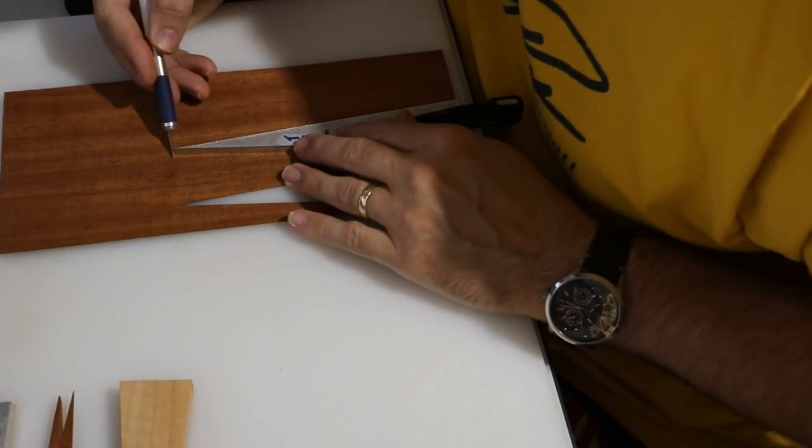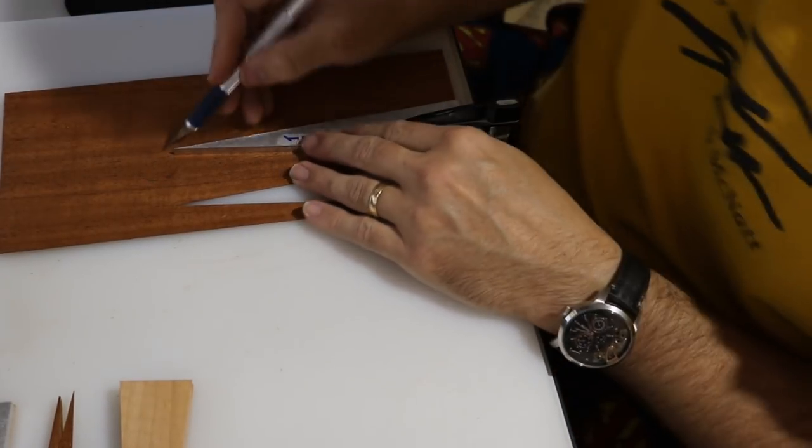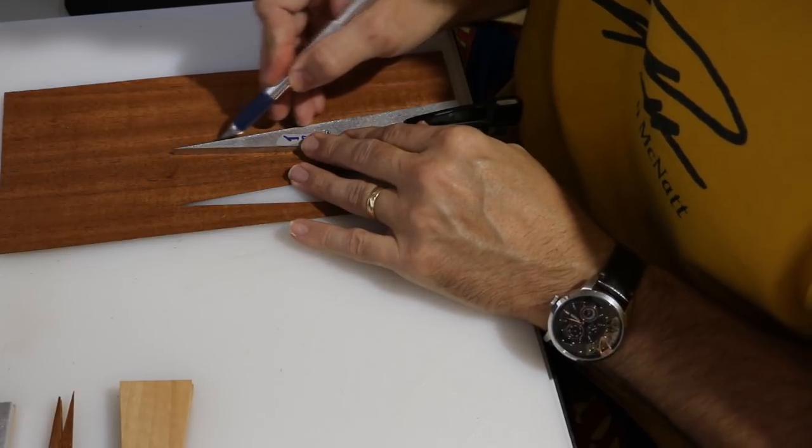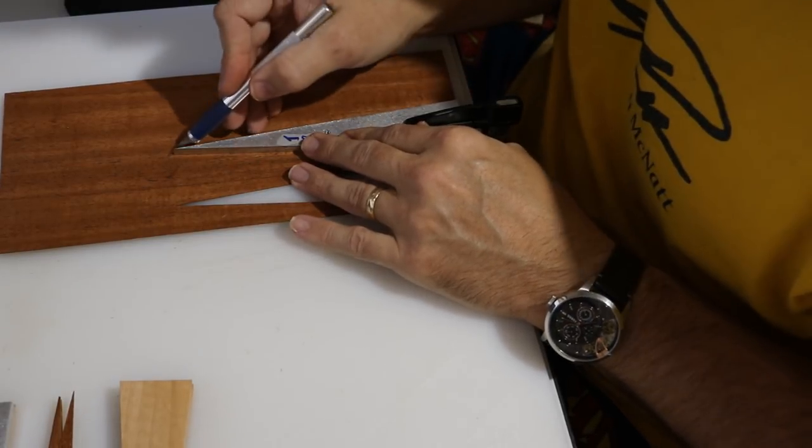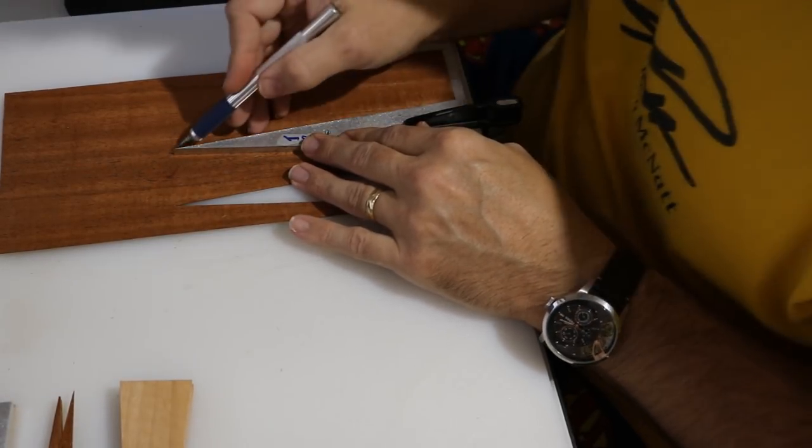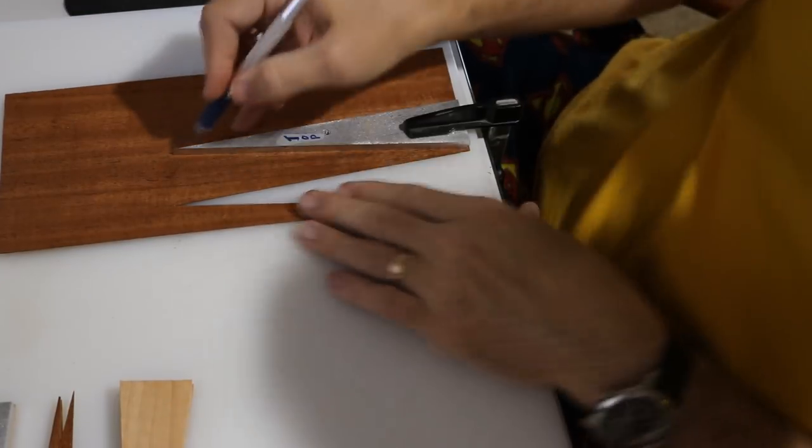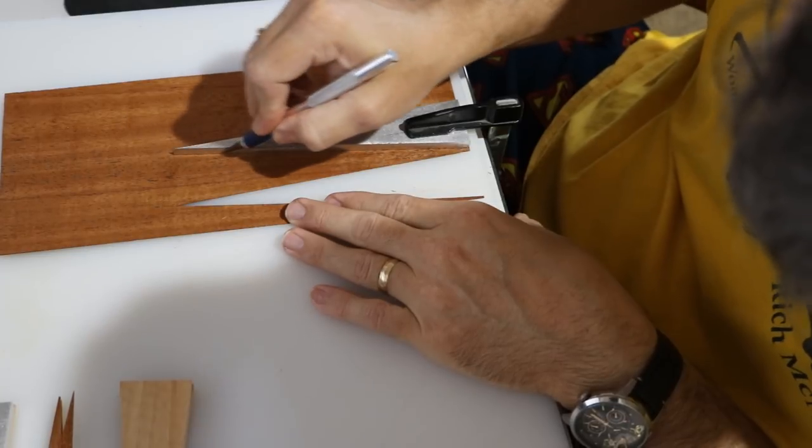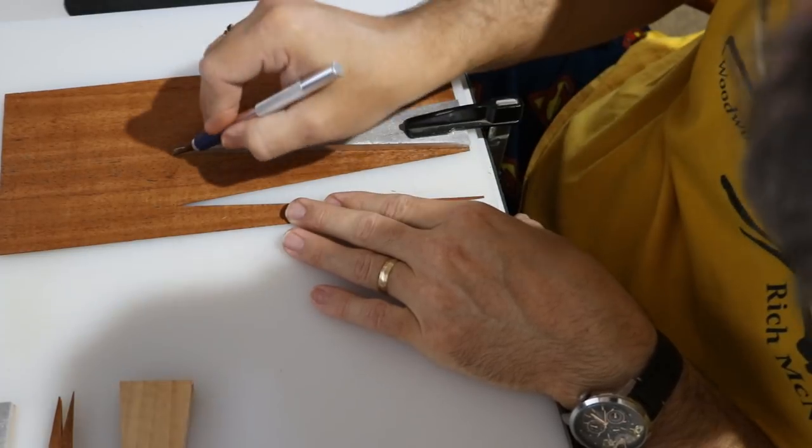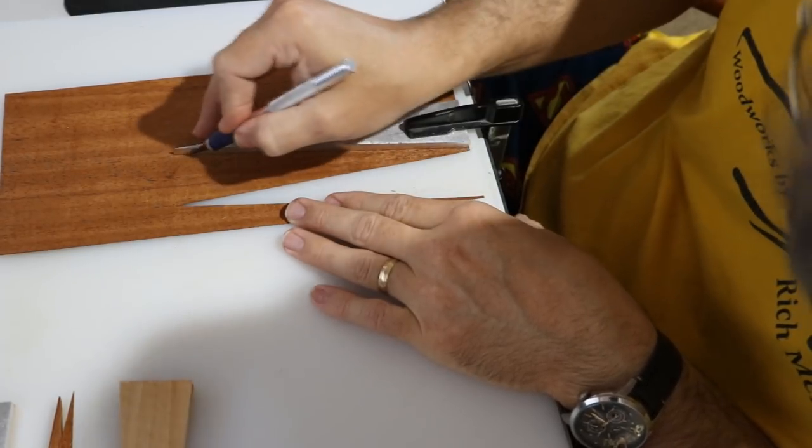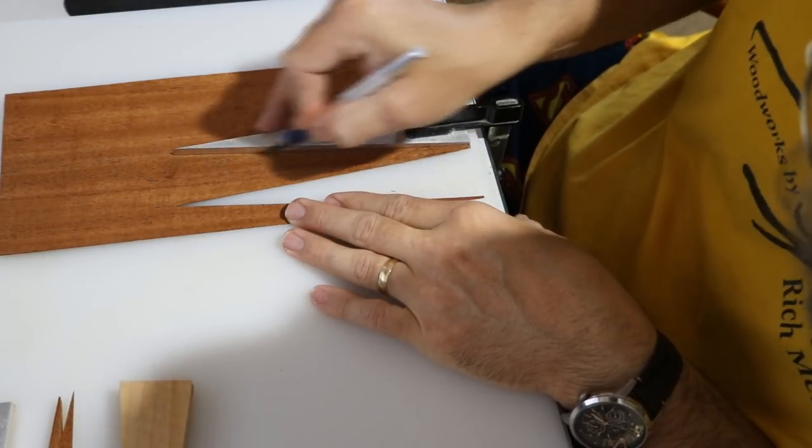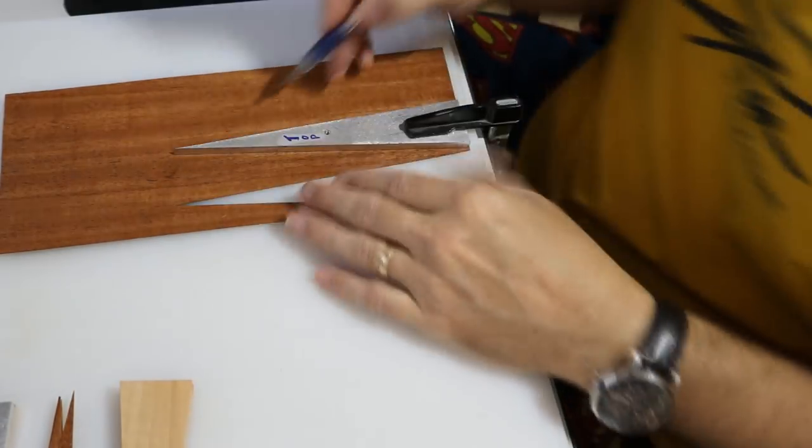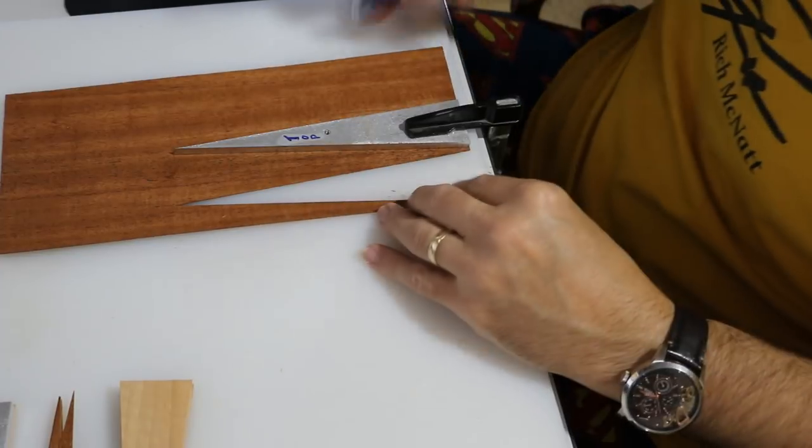I clamped the aluminum triangle down to the veneer so it didn't move. I started with making the cross cut right at the point and then scored down the edge of each side of the triangle. I didn't break loose the veneer until it was completely released and then I repeated the process with the other three woods.